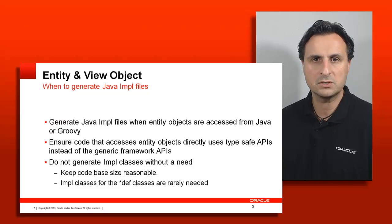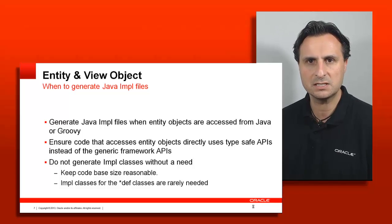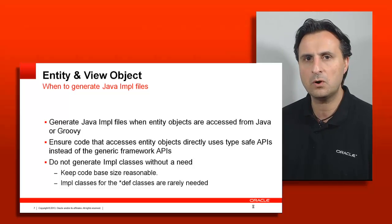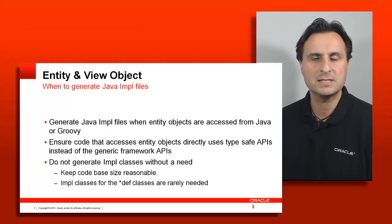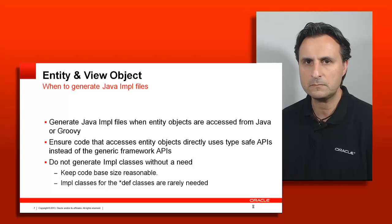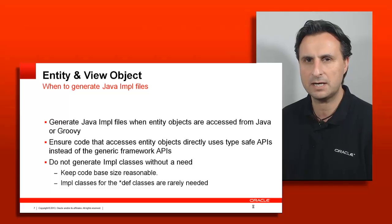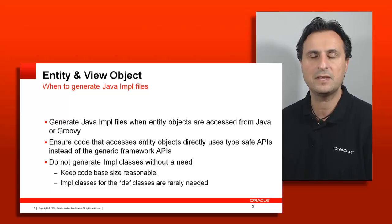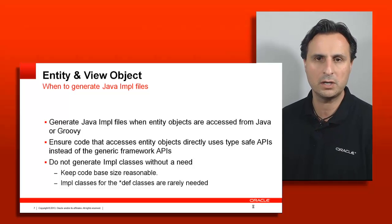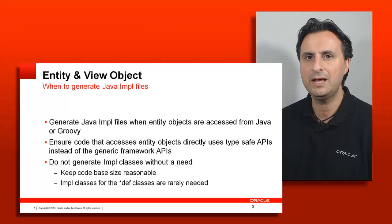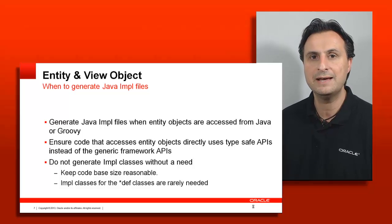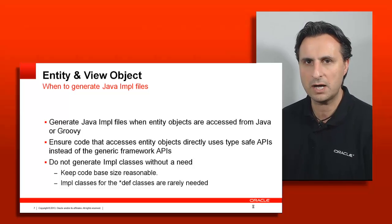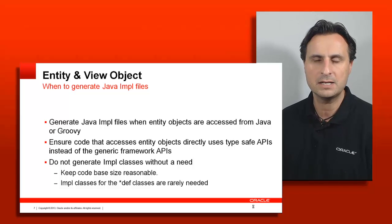There are reasons where you do want an impl class. One is where you need more complex access or computation with Groovy — a dot-notated scripting language you can use in ADF business components. A view impl class can expose public methods that Groovy can access to get values. Another reason is if you need typed interfaces. ADF business components provides a generic interface — for example, calling set attribute with the attribute name and value — but you can also generate an impl file that provides typed methods like get salary and set salary, returning the specific type of that attribute. But blindly creating impl files does not make sense.